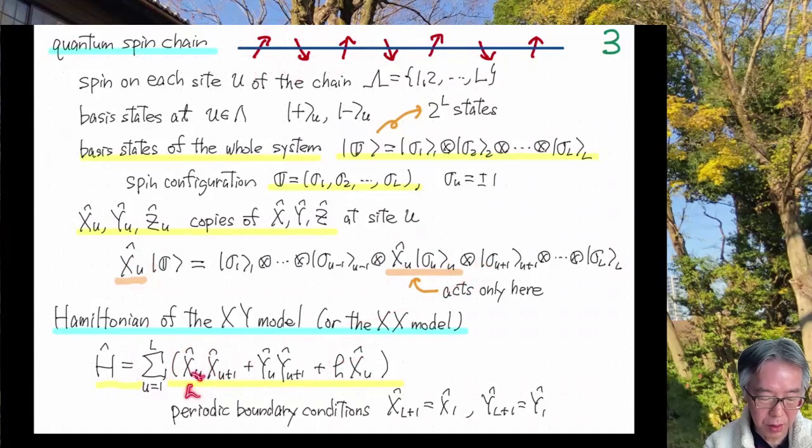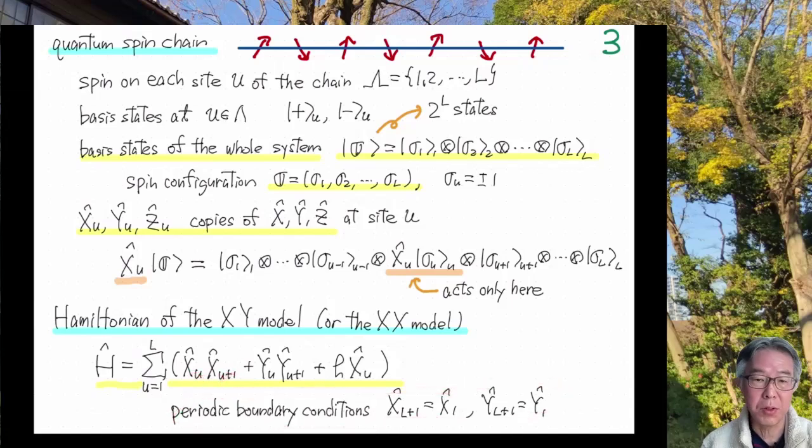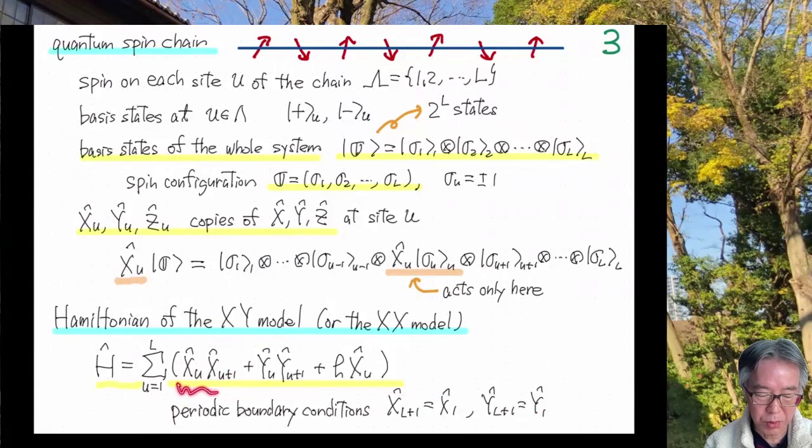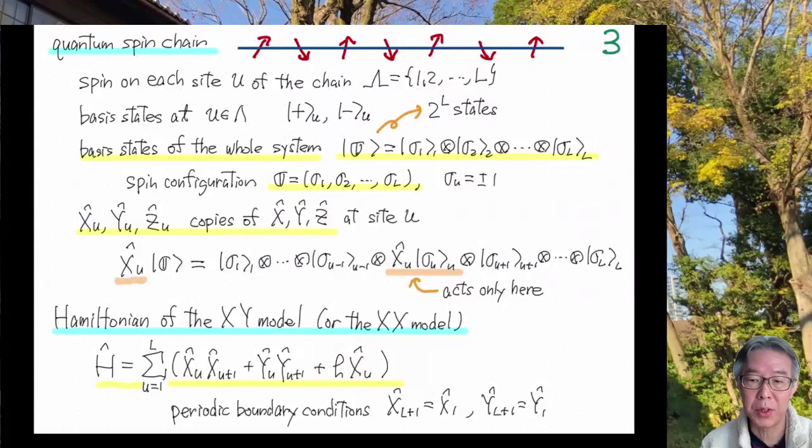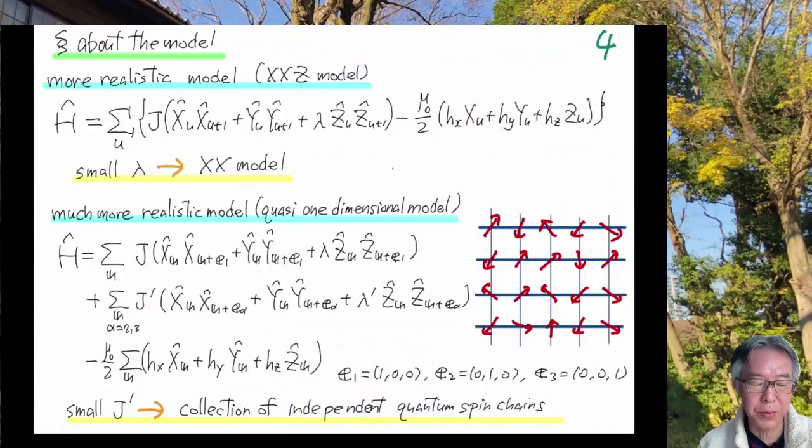And when u equals L, then you get L plus 1. There's nothing like that, but I use for convenience periodic boundary conditions. And about the name. So this is called the XY model because there's interaction between xx and yy, x component and y component. But sometimes this is called the XX model because the coefficients of these interactions are the same. So we're going to study this model and I will show you how to solve this when h equals 0. And I will show you how to prove that the model has no non-trivial conserved quantities if this term is present.